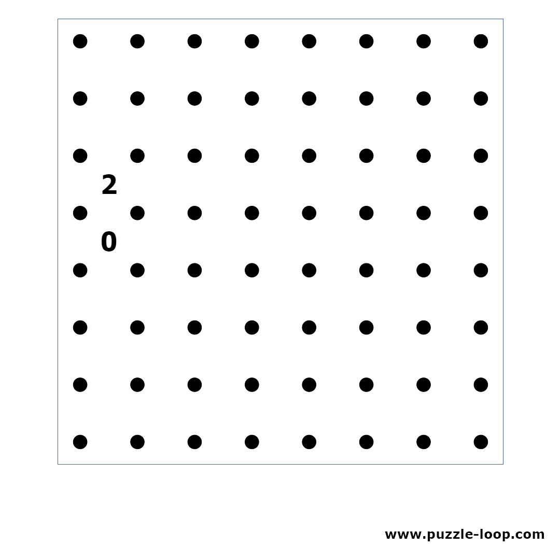The next pattern is when there is a 2 and a 0 on the edge of the puzzle. We can't have a line here so it is an X. The rest is trivial.